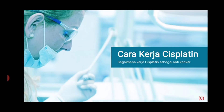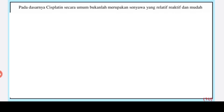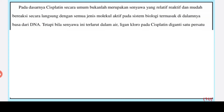Cara kerja Cisplatin: bagaimana cara kerja Cisplatin sebagai anti-kanker? Cisplatin bekerja sebagai anti-kanker dengan cara menggunakan ikatan silang DNA dan melakukan apoptosis pada sel yang sehat maupun sel kanker itu sendiri. Cisplatin sebagai obat kemoterapi juga memiliki efek samping, termasuk nefrotoksisitas yang berbahaya, namun dapat diminimalisasi dengan berbagai cara baik sebelum maupun selama kemoterapi diberikan. Pada dasarnya, Cisplatin secara umum bukanlah senyawa yang relatif reaktif dan mudah bereaksi secara langsung dengan semua jenis molekul aktif pada sistem biologi, termasuk di dalamnya basa dari DNA.